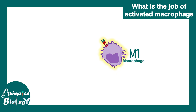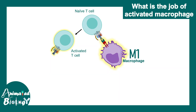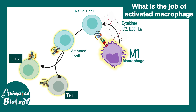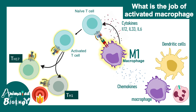M1 macrophages can present antigens on class 2 MHC molecules and show them to naive T cells. Naive T cells get activated, and M1 macrophages can secrete cytokines such as interleukin-12, 33, and 6, all of which are potent inflammatory cytokines that trigger the differentiation of these activated T cells into TH1 and TH17 subcategories. Both these cells are pro-inflammatory in nature. M1 macrophages also secrete chemokines, which are chemoattractant molecules that further attract other immune cells to the site of infection, such as macrophages, dendritic cells, or even neutrophils.